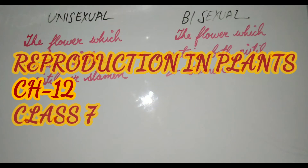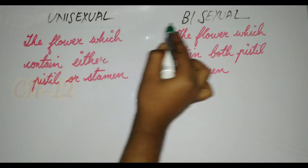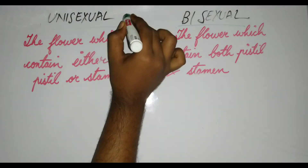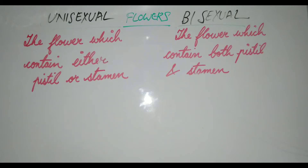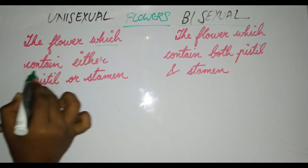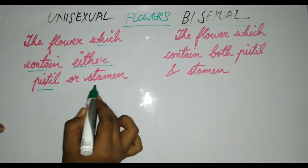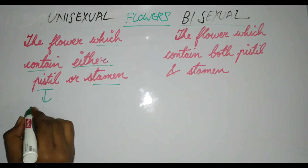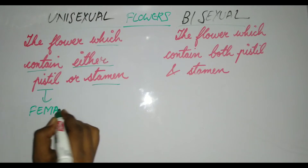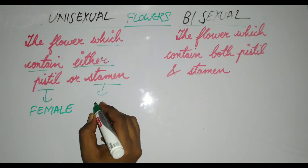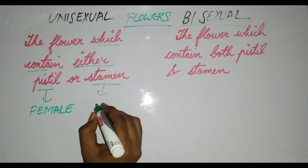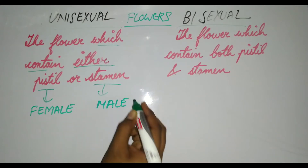In this video we will be discussing the difference between unisexual flowers and bisexual flowers. A unisexual flower is one which contains either a pistil or a stamen. The pistil is the female reproductive part of the flower, and the stamen is the male reproductive part.